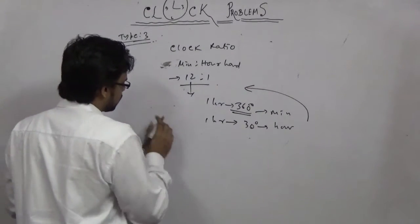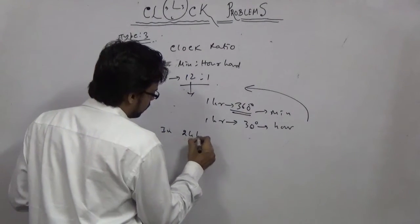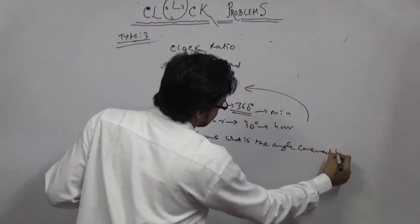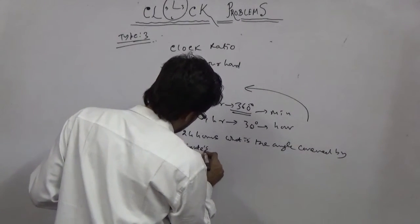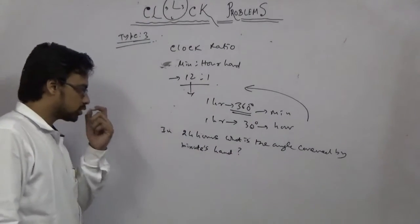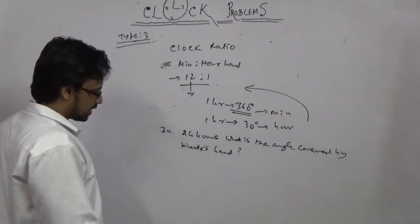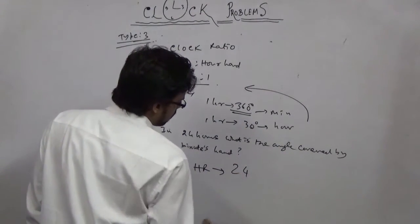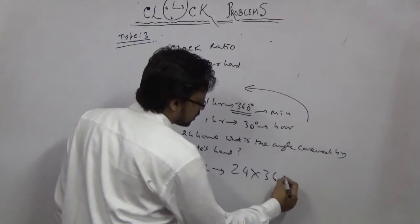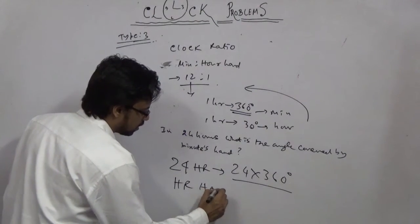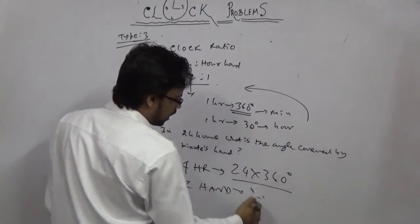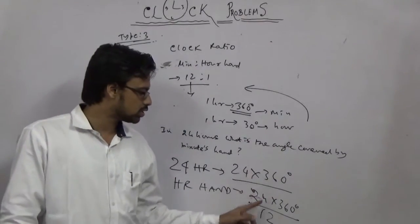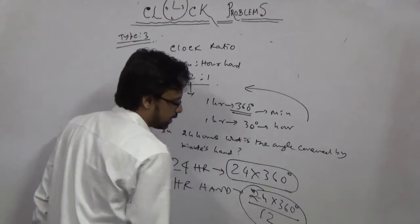In this type, we use the clock ratio. For example: in 24 hours, what angle is covered by the minute hand? That is 24 × 360 degrees. If you ask about the hour hand, that is 24 × 360 divided by 12. These are the two angles covered by the minute hand and the hour hand respectively — you can similarly calculate using this ratio.